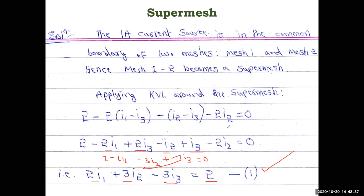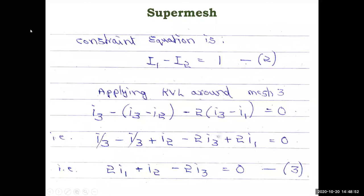To get the second equation we write the constraint equation, which relates the two mesh currents. Since the 1 amp current source flows in the direction of i1, the constraint equation is: i1 minus i2 equals 1 amp. This is equation two.